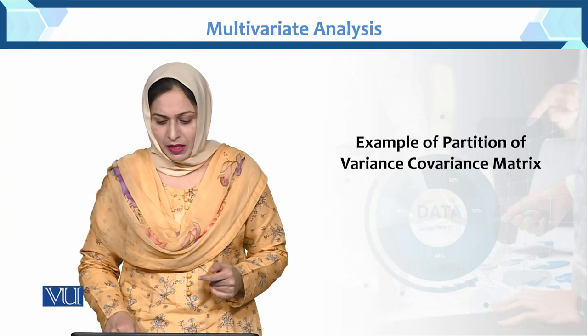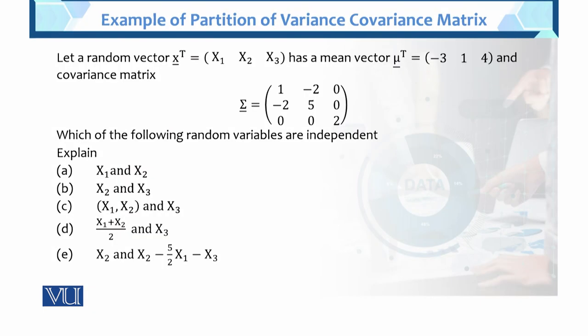This is the example of the partition of variance-covariance matrix. Let the random vector x1, x2, x3 have a mean vector mu transpose of minus 3, 1, and 4. We are given the variance-covariance matrix and the mean vector. We will check which of the following random variables — a, b, c, d, e — are independent, and what condition makes them independent.